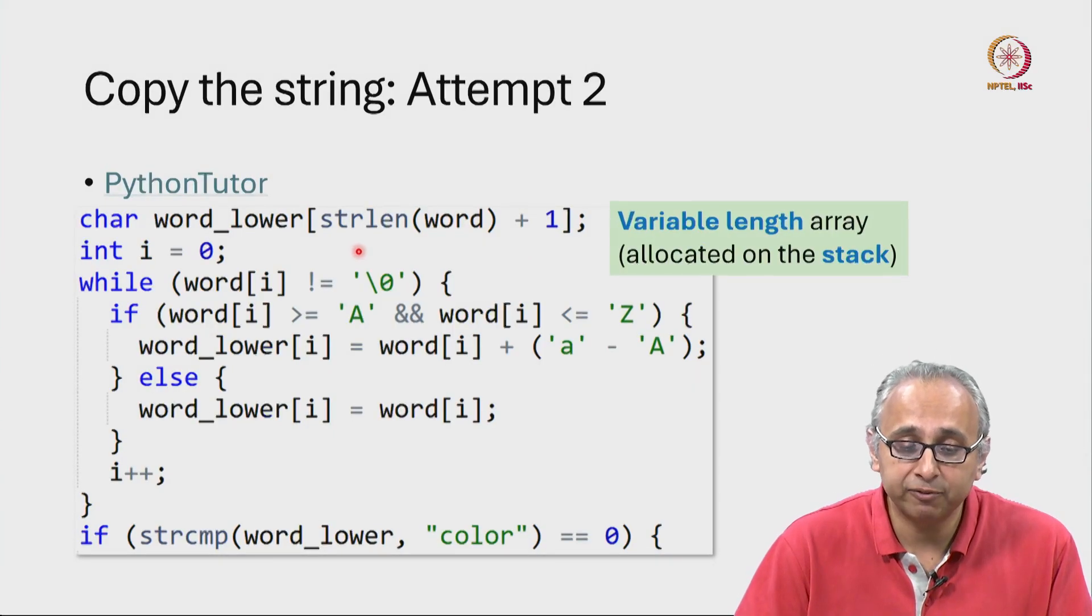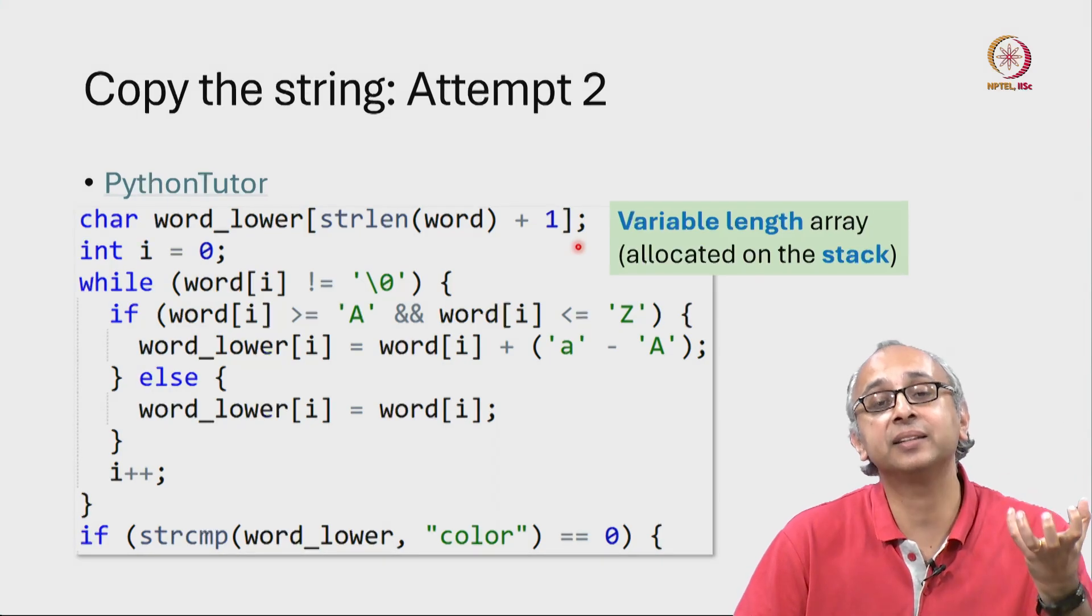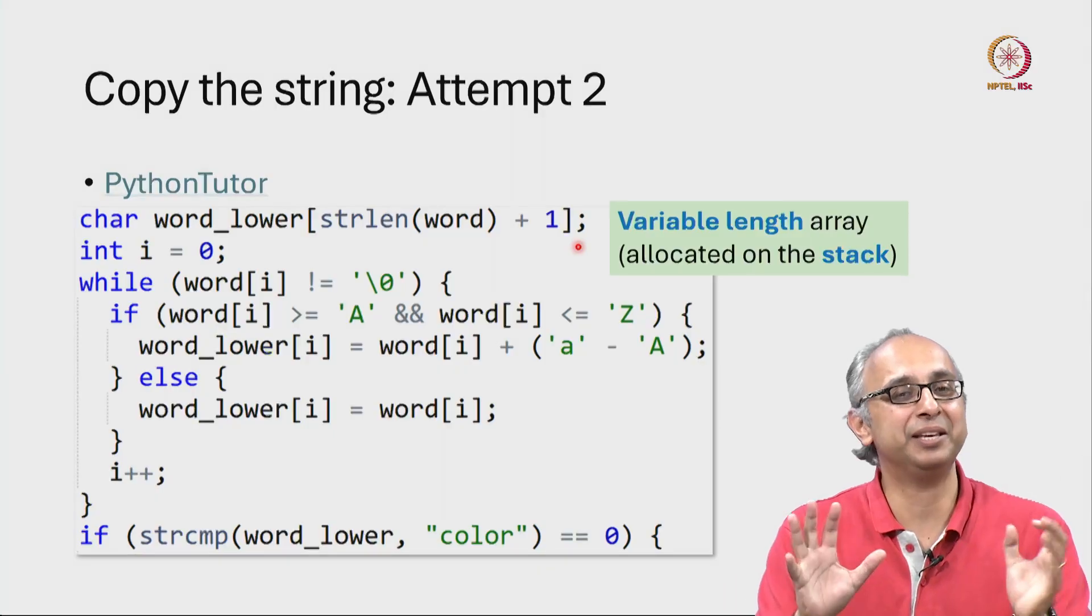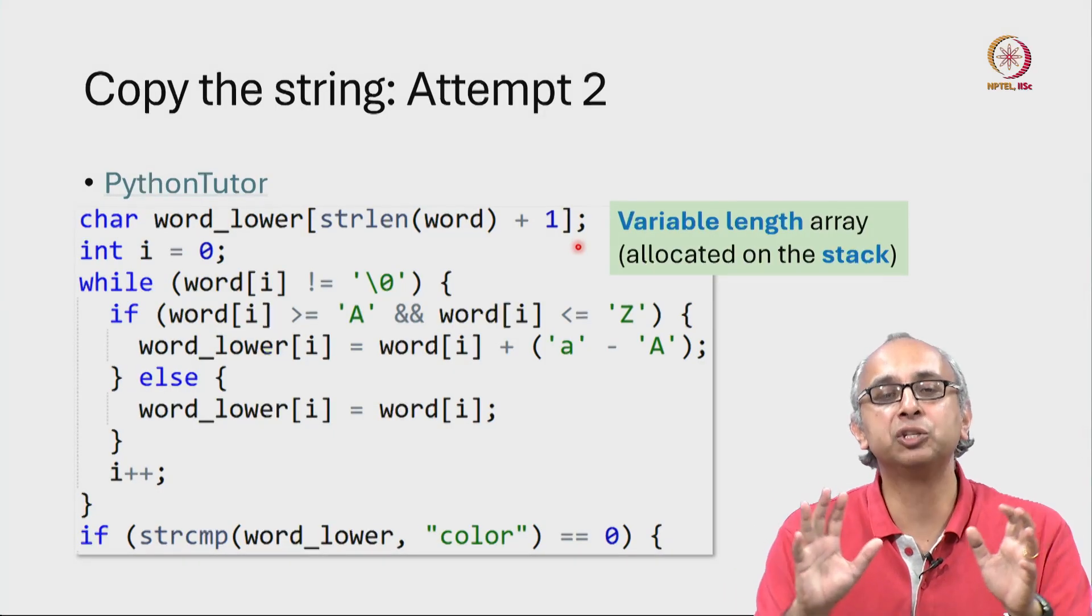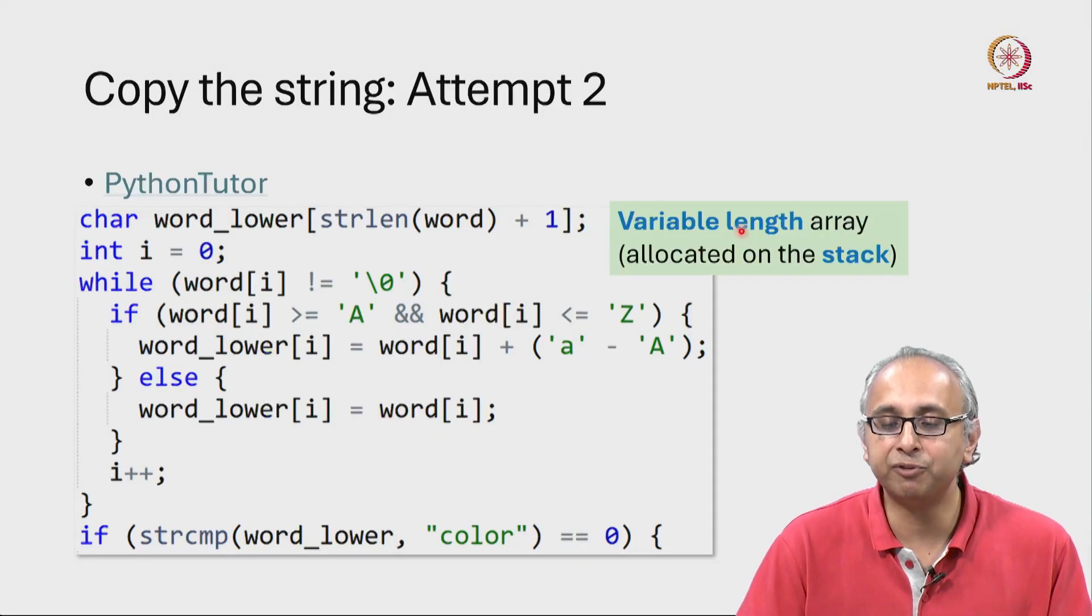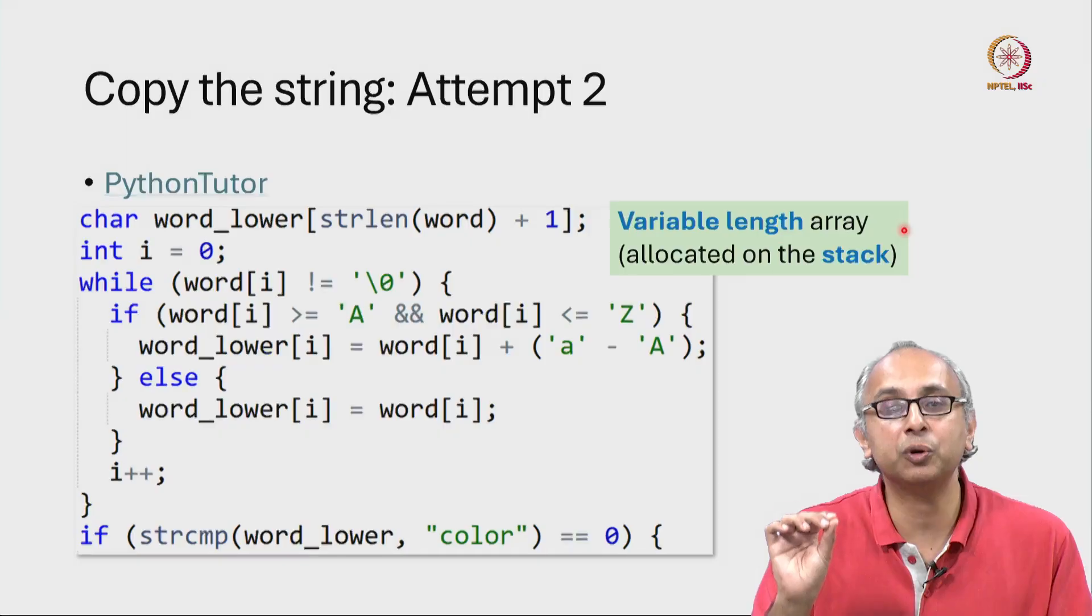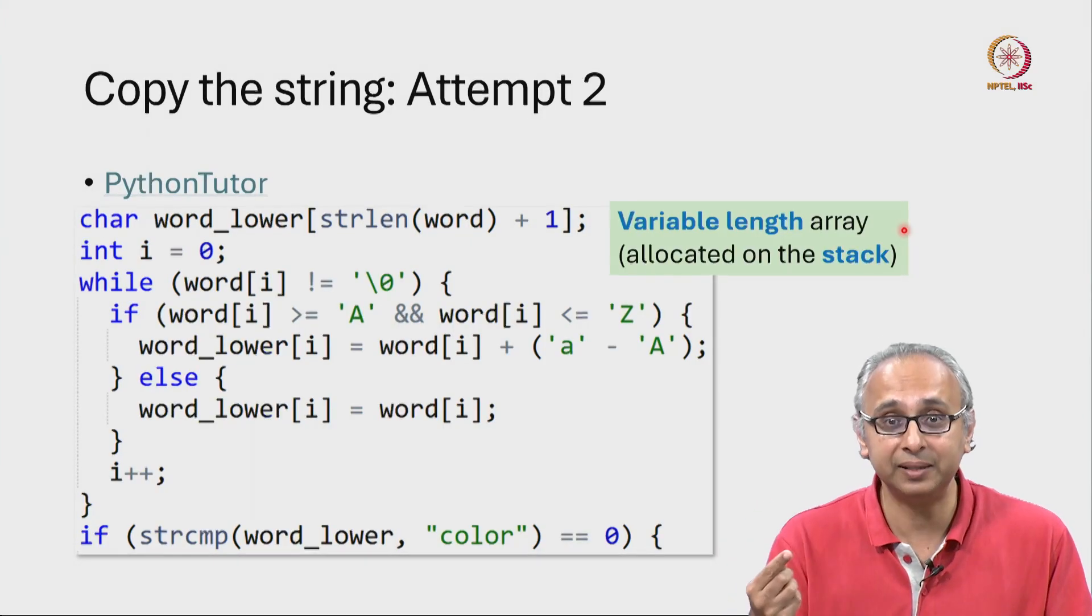But once we have calculated this amount, we allocate that amount of space and from that point on, the array is fixed. You then cannot grow and shrink it. So this term variable length array actually just means that it's going to have a size which I cannot predict at compile time.